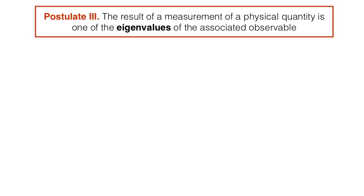Postulate 3 of quantum mechanics is the first of a series of postulates that describe the process of measuring. You will remember from Postulate 2 that a physical quantity is represented by an operator, which we call an observable. Then Postulate 3 tells us that the result of a measurement is one of the eigenvalues of the associated operator. This means that to understand measurements in quantum mechanics, the very first thing we have to learn about are the eigenvalues and the eigenstates of an operator, which is precisely what I want to discuss in this video.